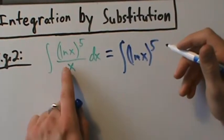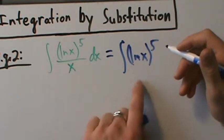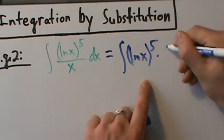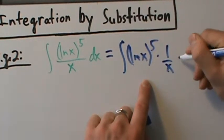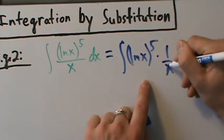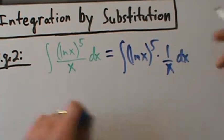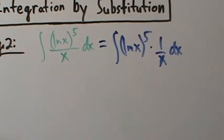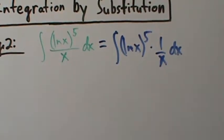We're going to pull this natural log of x to the fifth off of the fraction, so this is going to be 1 over x dx out here. So why do we do that? Well, now it's easier to see a function and its derivative.